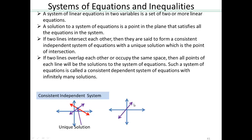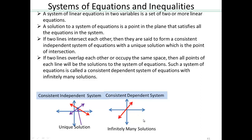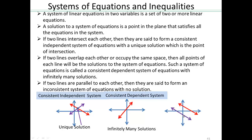You can also have two lines that overlap each other and occupy the same space in the plane, which means every single point on this line is going to be a solution. Such a system is called a consistent dependent system, since there are infinitely many points on this line. You can also have two parallel lines, meaning the two lines do not intersect, so there is no solution. Such a system is called an inconsistent system.